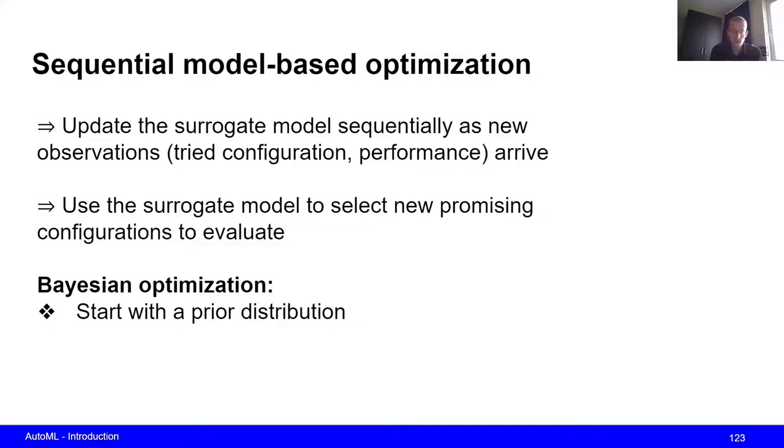Now a specific instantiation of sequential model-based optimization is Bayesian optimization. And what is characteristic of Bayesian optimization is that we start off with some prior distribution, so we start off with some initial surrogate model. And as our data points come in, so as we try out more configurations and observe their performances, we update our beliefs about the loss surface. So we update our surrogate model.